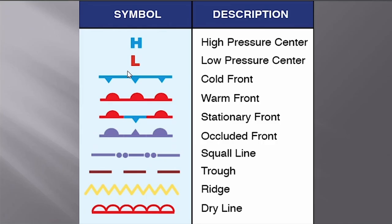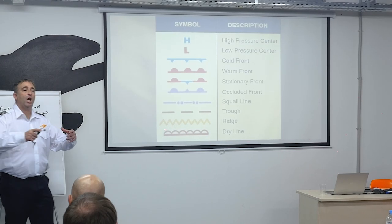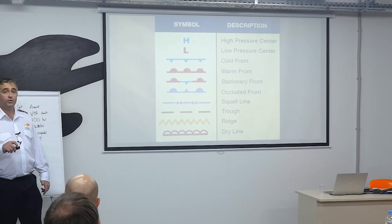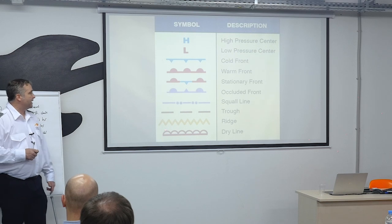Symbols: high, low, cold front with jagged teeth, warm front with smiley faces, stationary front with symbols going each way since they don't go anywhere, and occluded front where both symbols go the same direction because one overran the other. A squall line is a long, wide area of severe thunderstorms. A trough is an elongated line of low pressure, a ridge is an elongated line of high pressure, and then a dry line.